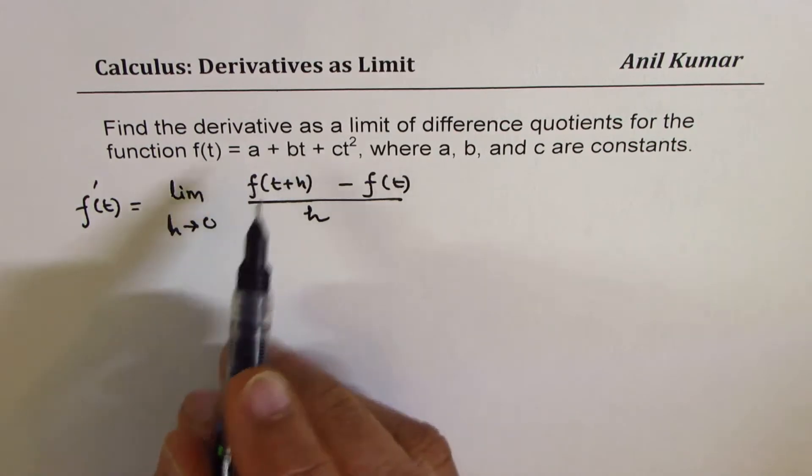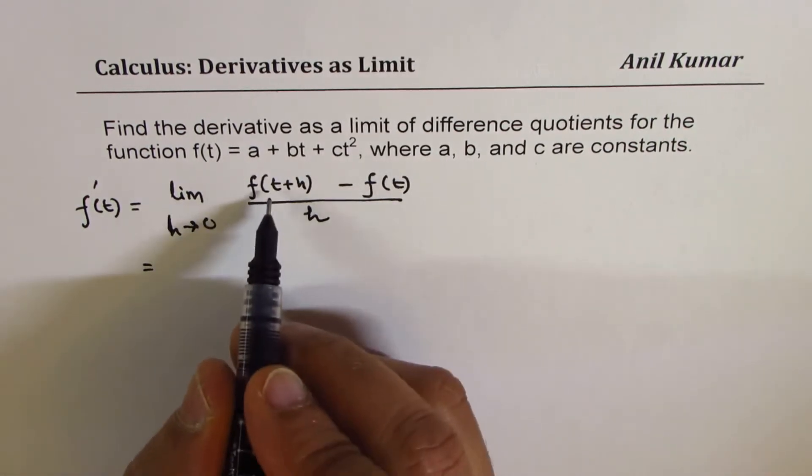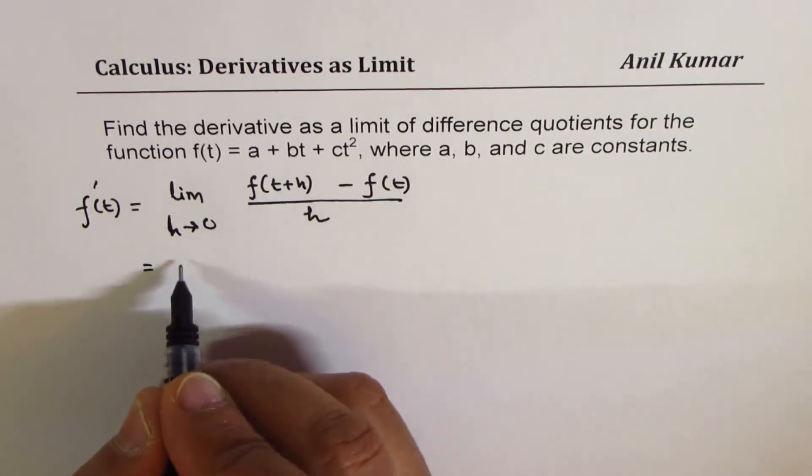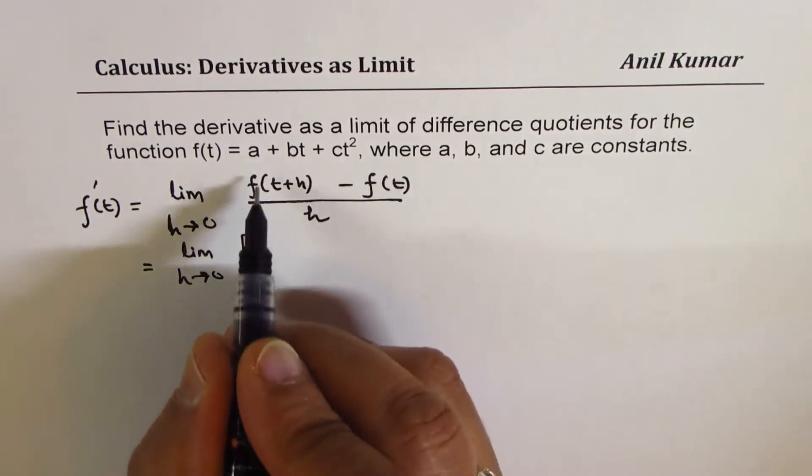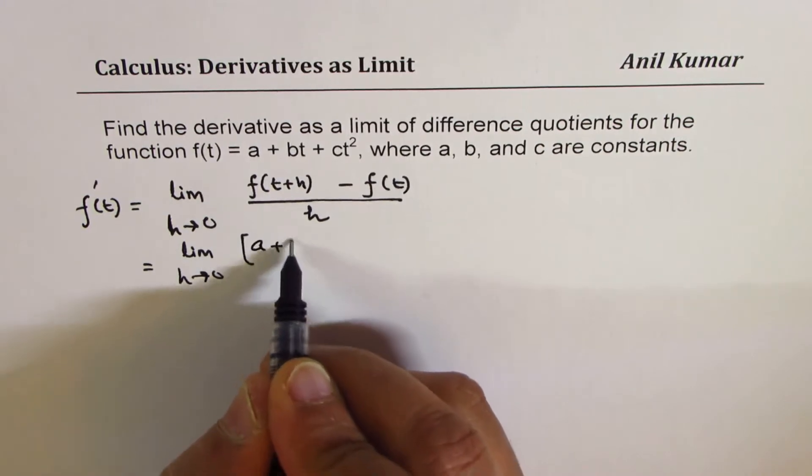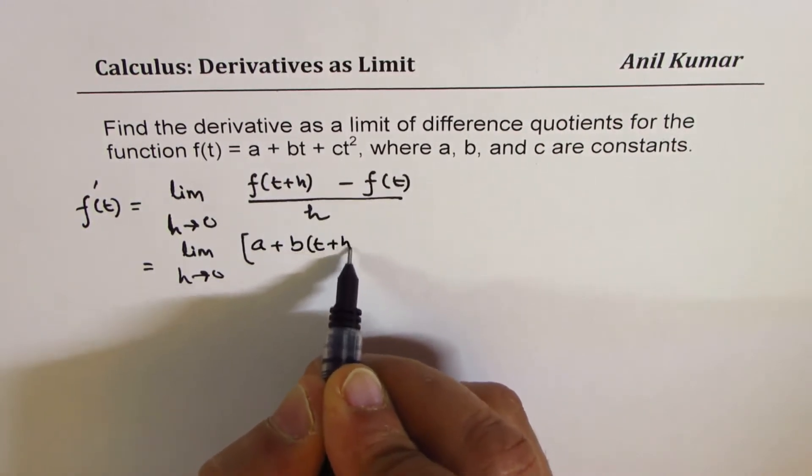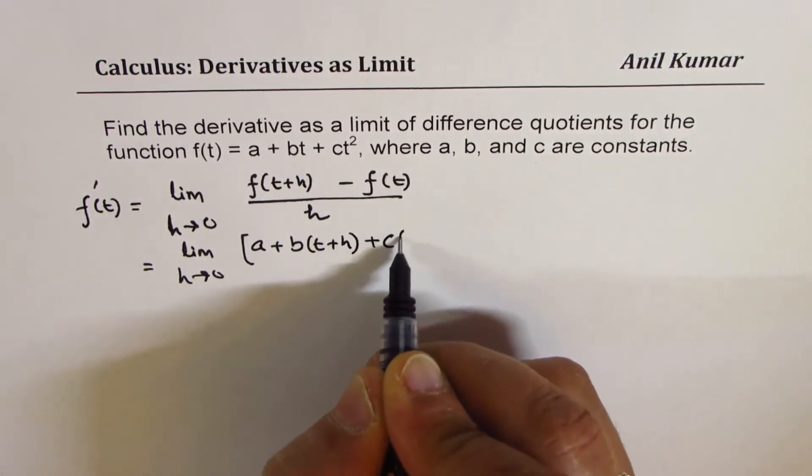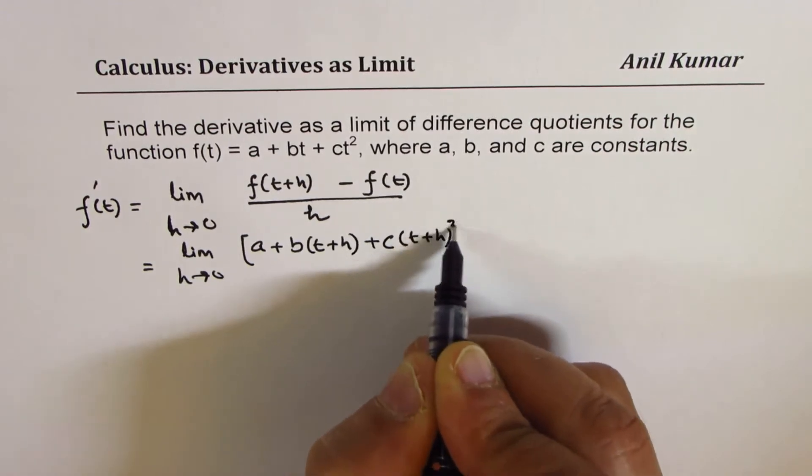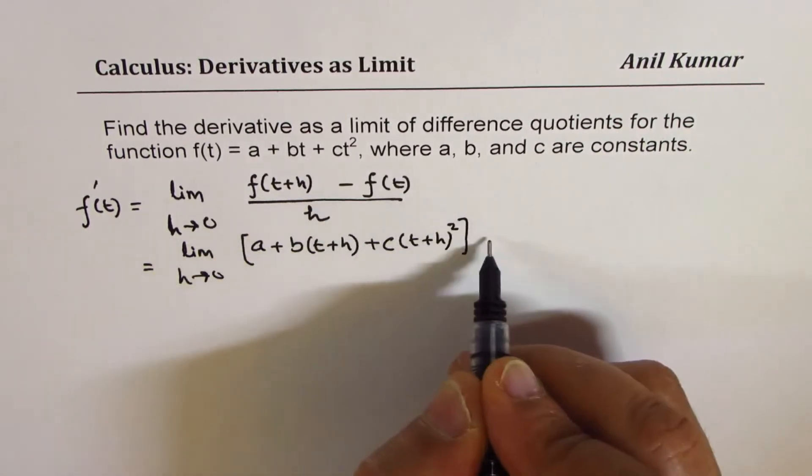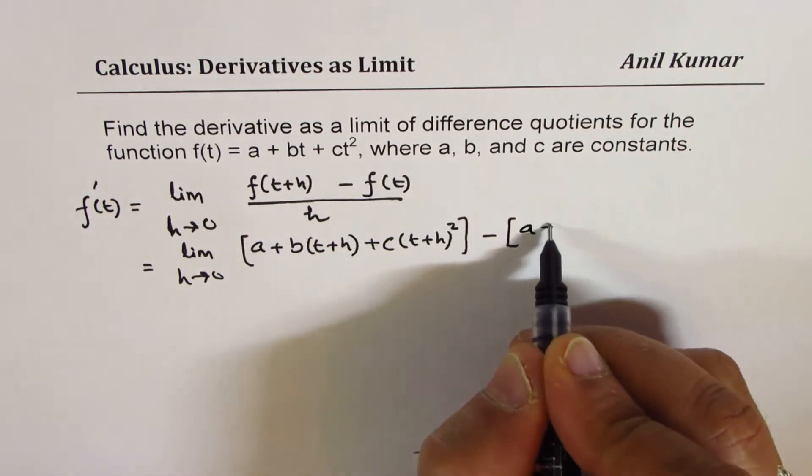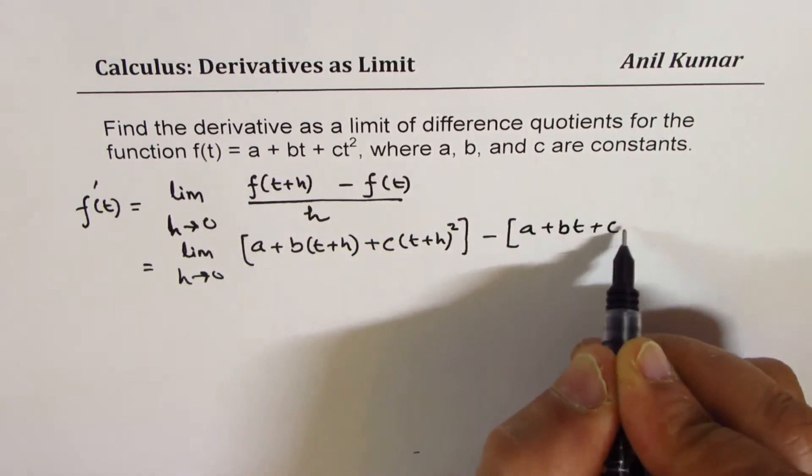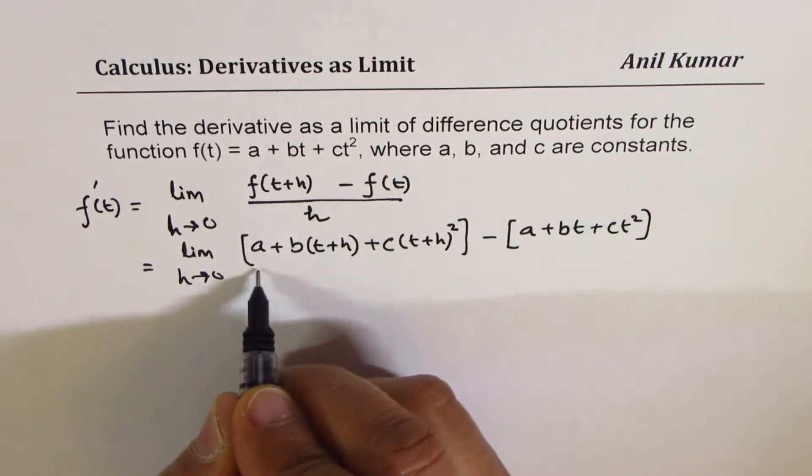Let's replace t with t plus h to write the first function. We get limit h approaches 0 for a plus b times t plus h plus c times t plus h whole square. That's the first part, minus f of t, copy it as such, a plus bt plus ct square over h.